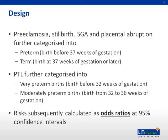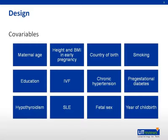The risks were subsequently calculated as odds ratios at 95% confidence intervals. The following covariables were controlled for: maternal age, height and BMI in early pregnancy, country of birth, smoking, education, IVF, chronic hypertension, pre-gestational diabetes, hypothyroidism, SLE, fetal sex, and year of childbirth.